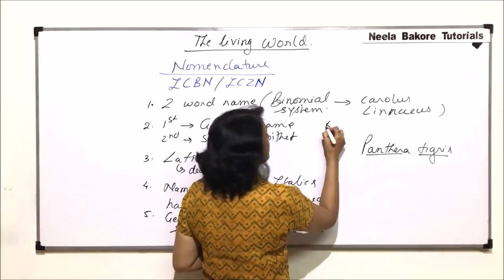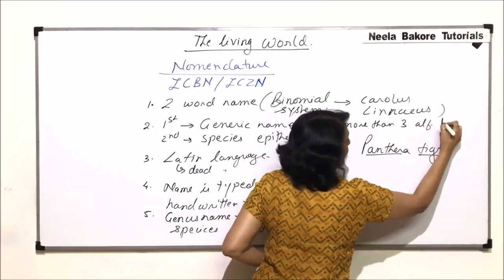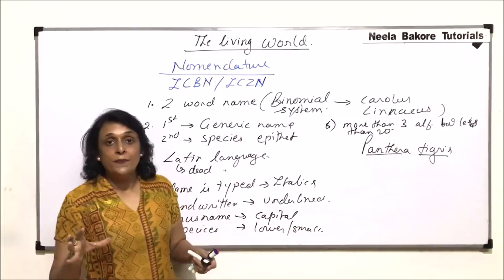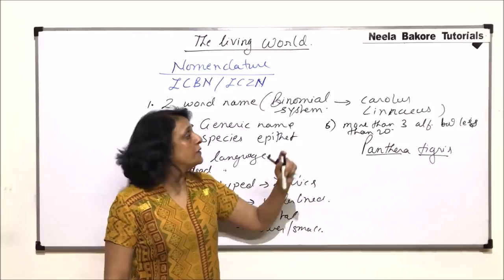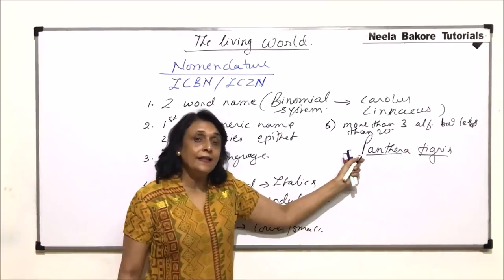There is one more rule which is often ignored, and that is the sixth one. The rule says the name should have more than three alphabets but less than twenty, so that the word is not too short or too long. To summarize: the name should be taken from Latin; if typed it should be in italics; if handwritten it should be underlined; the genus always starts with a capital and the species with lower case.